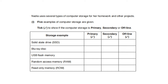Nadia uses several types of computer storage for her homework and other projects. Five examples of computer storage are given to show if the storage is primary, secondary, or offline. The first one is solid state drive SSD — that is secondary storage. Next is Blu-ray disk, which is offline storage. USB flash memory is also offline storage. RAM is primary storage and ROM is also primary storage.